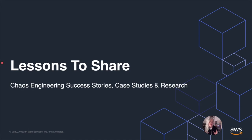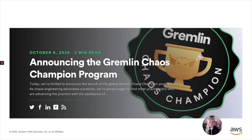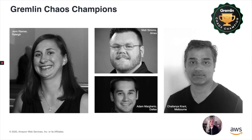Now to wrap up, I'd like to share some lessons, chaos engineering success stories, case studies, and research. Something cool that we recently launched on October 6 is the Gremlin Chaos Champion program, launched by Aileen. You can check that out on our blog at gremlin.com/blog. You can also nominate yourself, a friend, or a coworker to become a chaos champion because of great work they're doing in the community. We're also looking for technical experts helping everybody learn as much as they can about chaos engineering. We have our first batch of chaos champions.